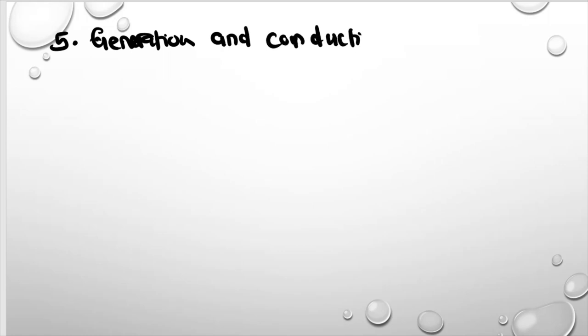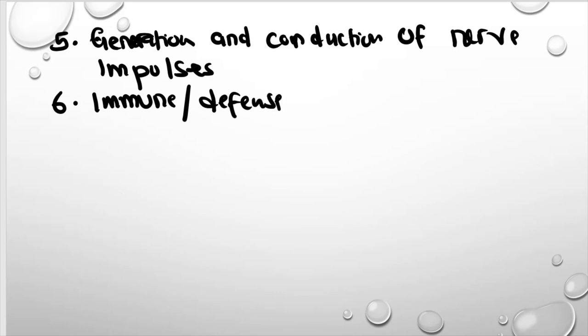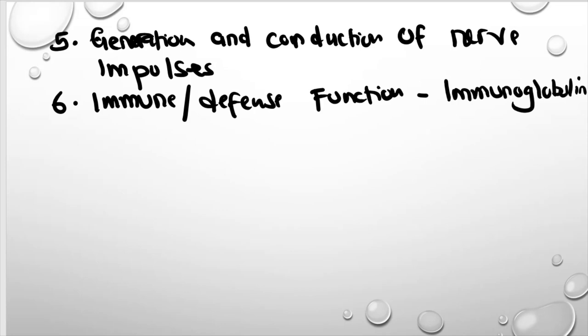Number five, proteins are used in the generation and conduction of nerve impulses. In physiology you've learned about an action potential — the proteins responsible for generation and conduction of nerve impulses. They are also involved in immunity — immune or defense function. The proteins used in defense are immunoglobulins, which are made by the liver and are plasma proteins.